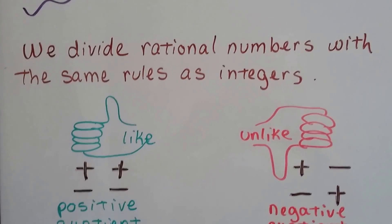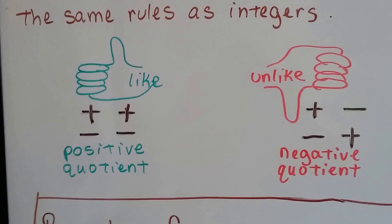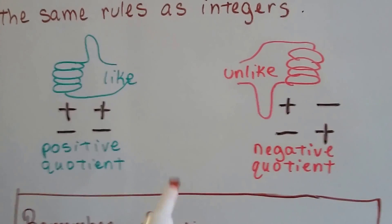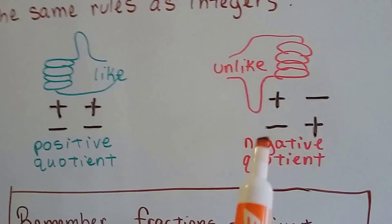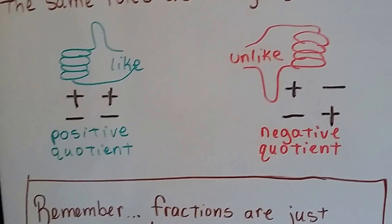We divide rational numbers with the same rules as integers. If we've got two like signs, positive and positive or negative and negative, it's going to be a positive quotient answer. And if we've got unlike signs, it's going to be a negative quotient, a negative answer.